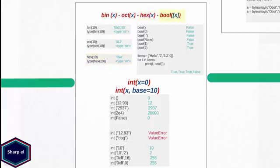The next function, bool, returns either boolean true or false based on the passed argument. If there is no argument, or the argument equals 0 or None, the bool function returns false. Any other values like integer 1 or 2 always return boolean true.